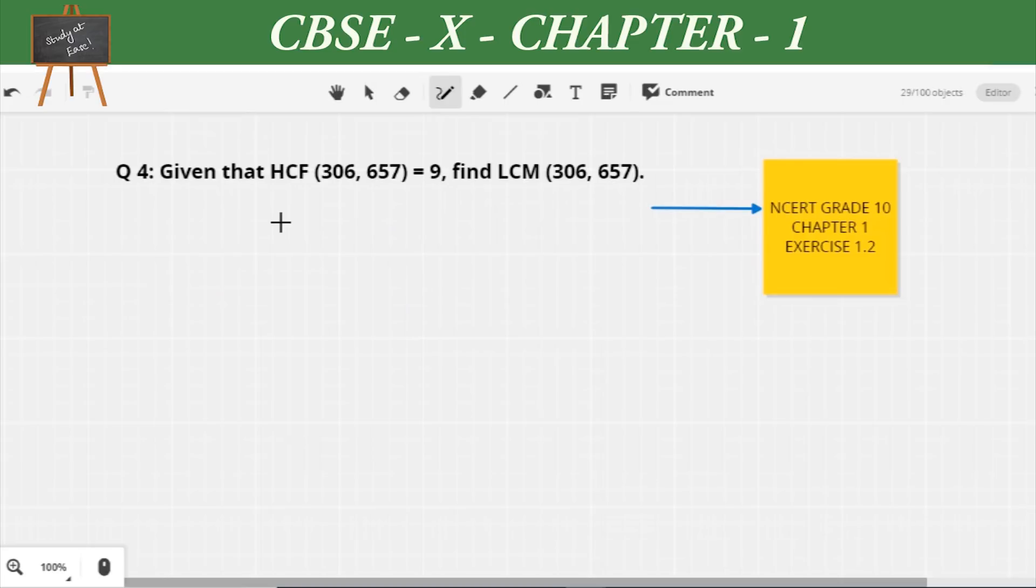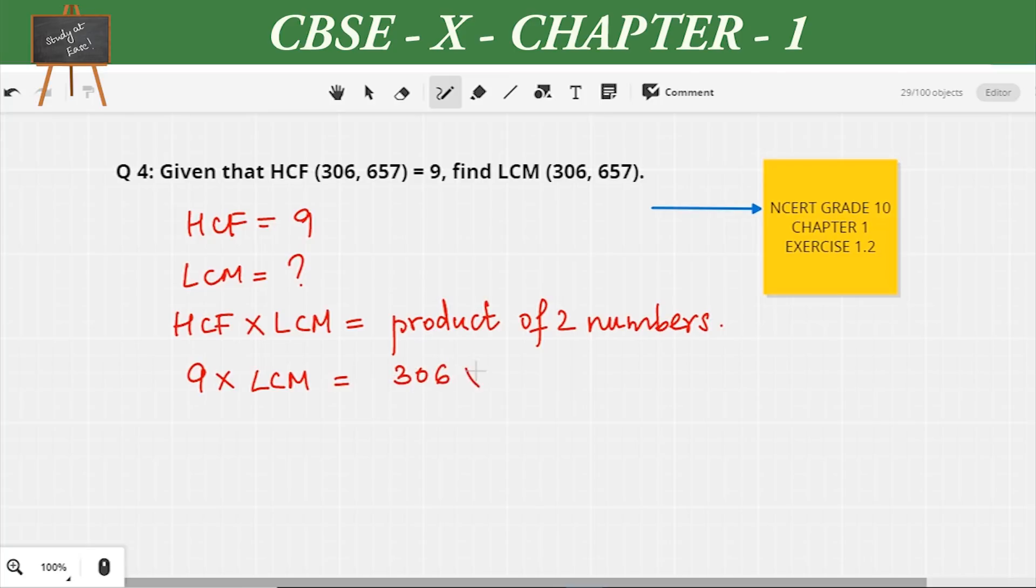Let us look at the fourth question: Given that HCF of 306 and 657 is equal to 9, find the LCM. HCF is given as 9, we don't know what is LCM, and we know the two numbers. So we know our formula: HCF × LCM = product of two numbers. So 9 × LCM = 306 × 657.